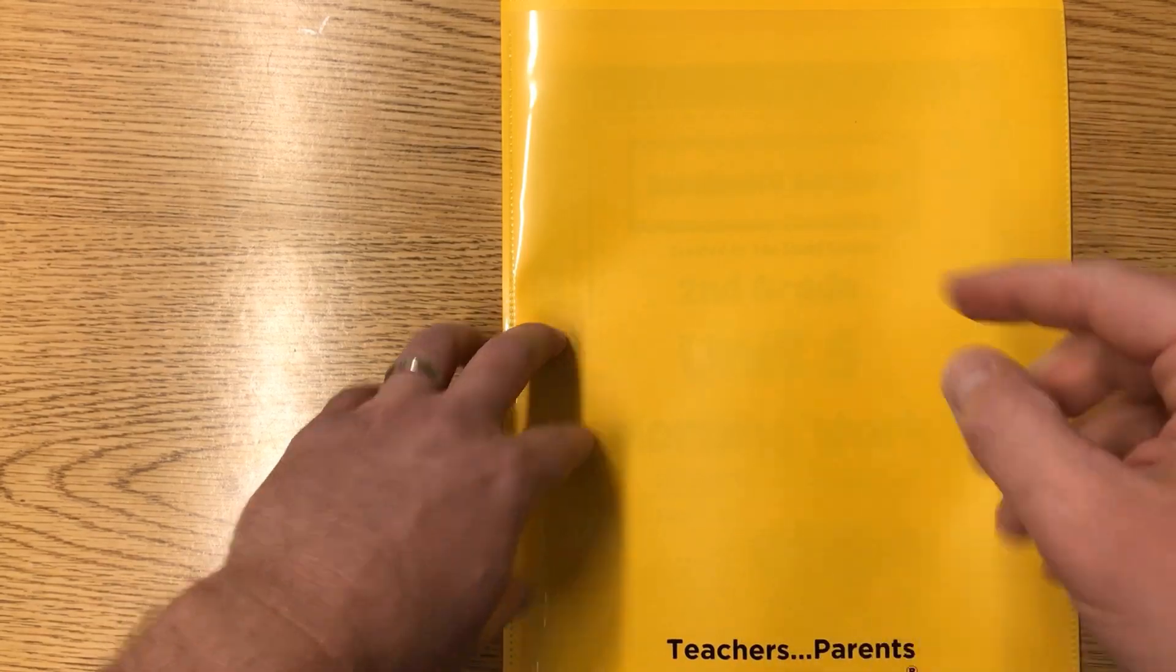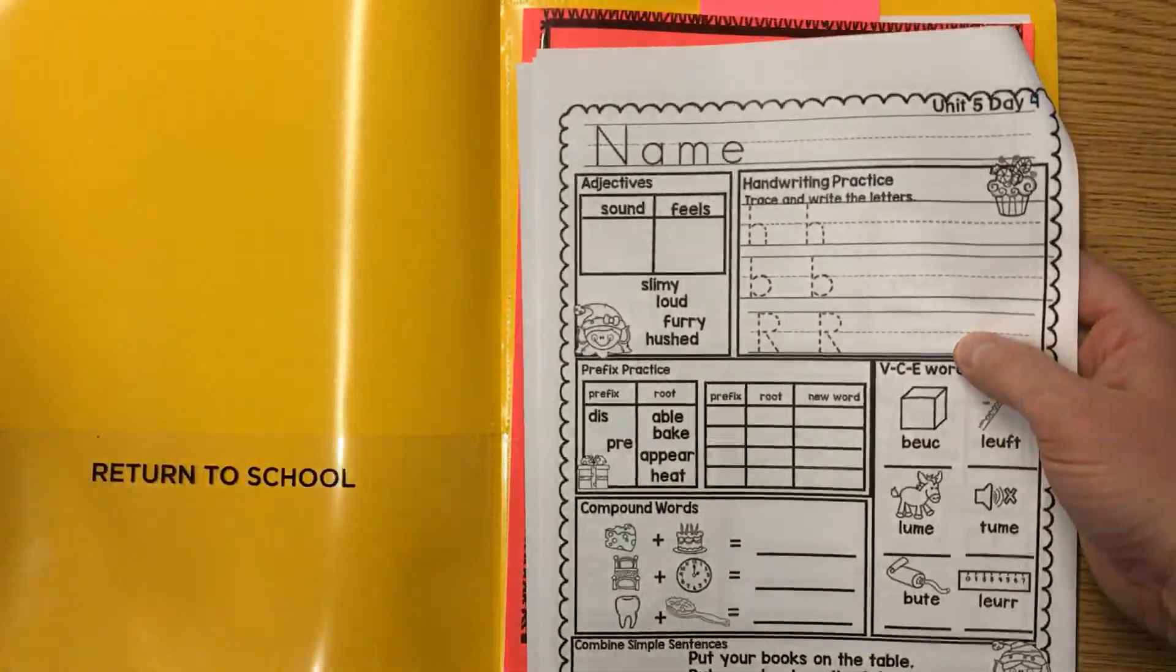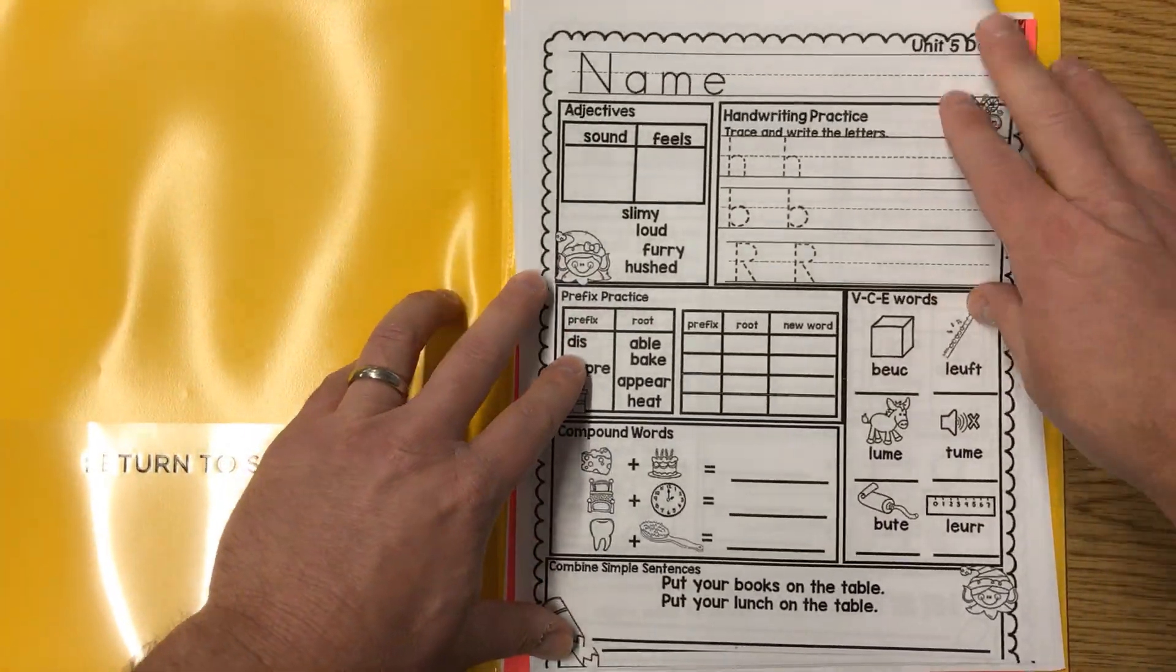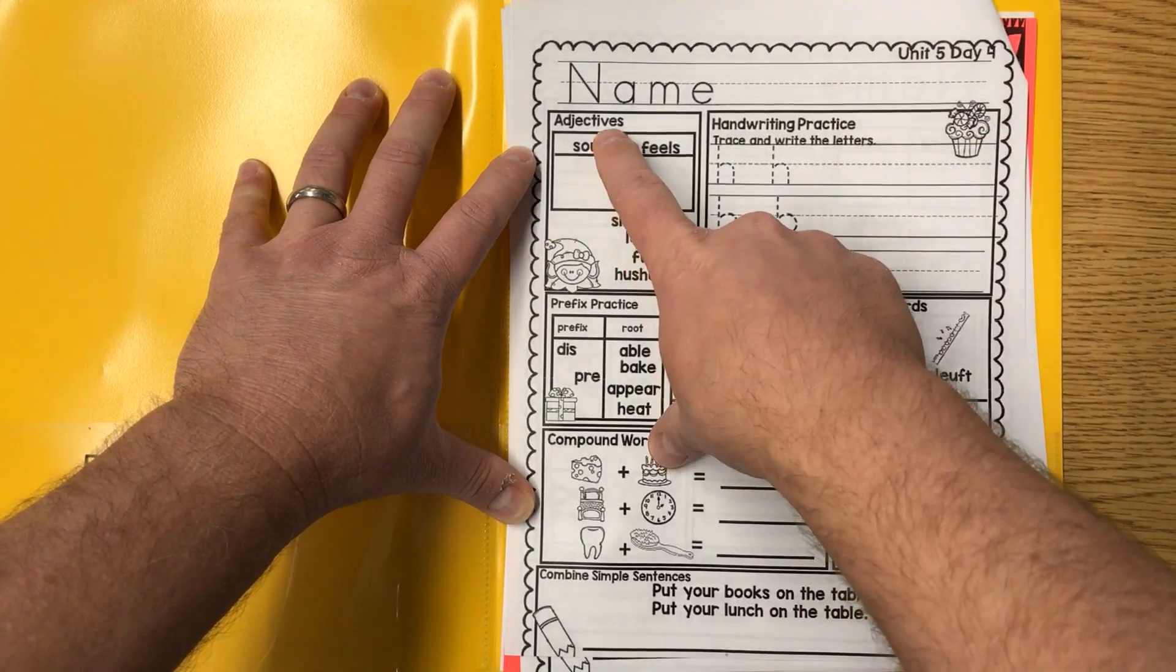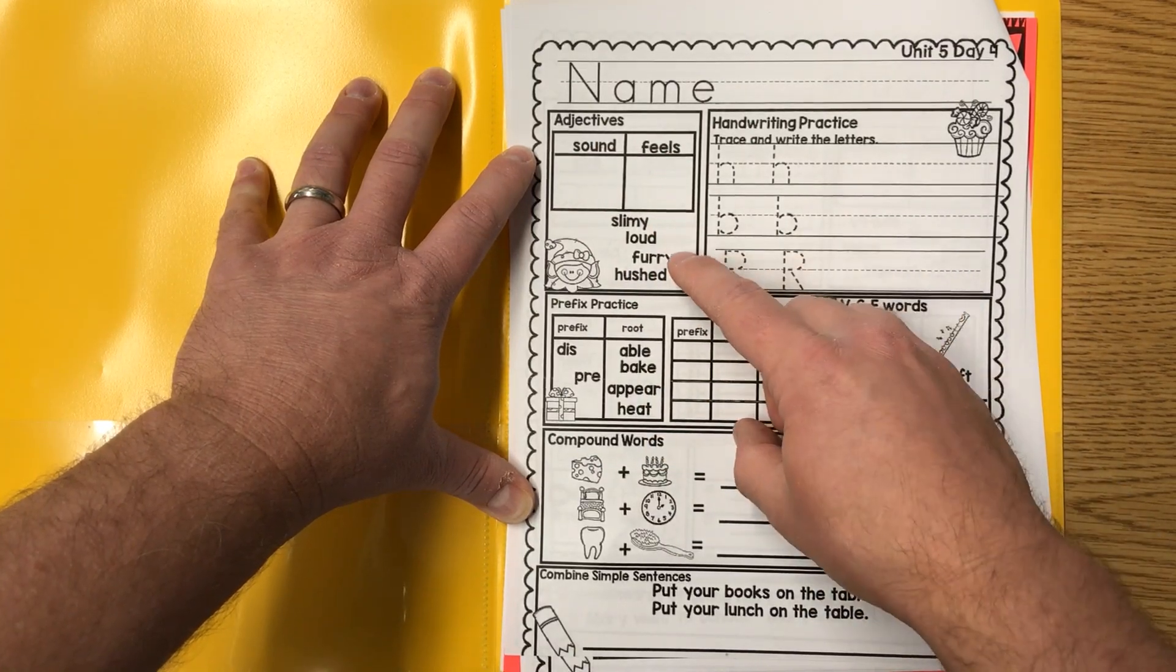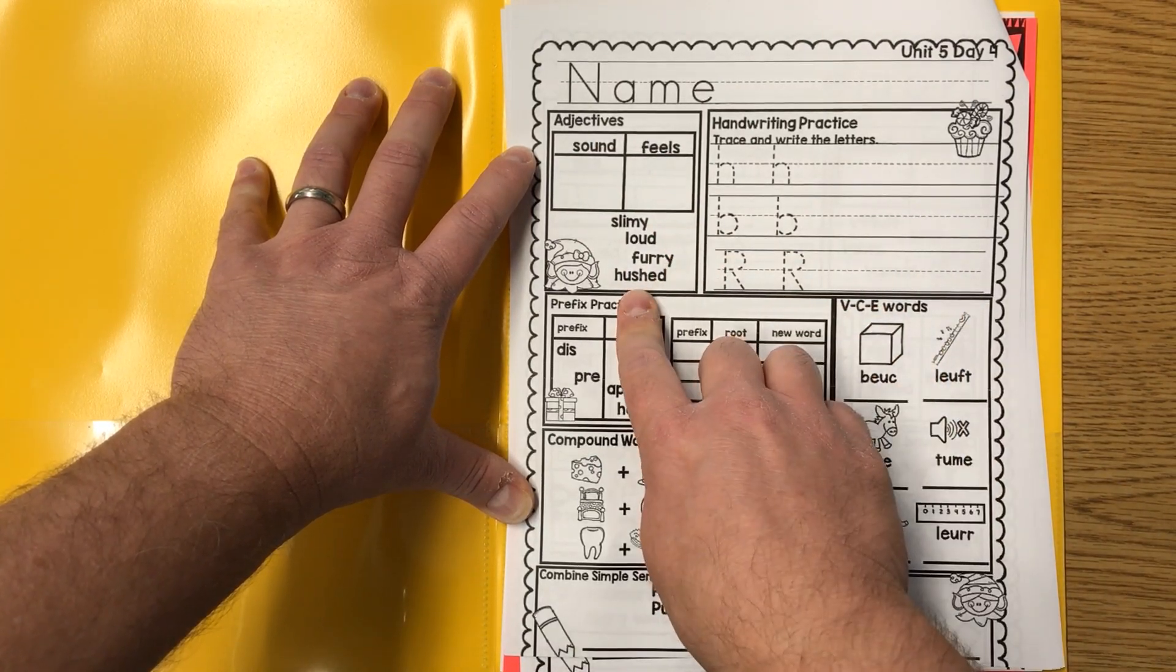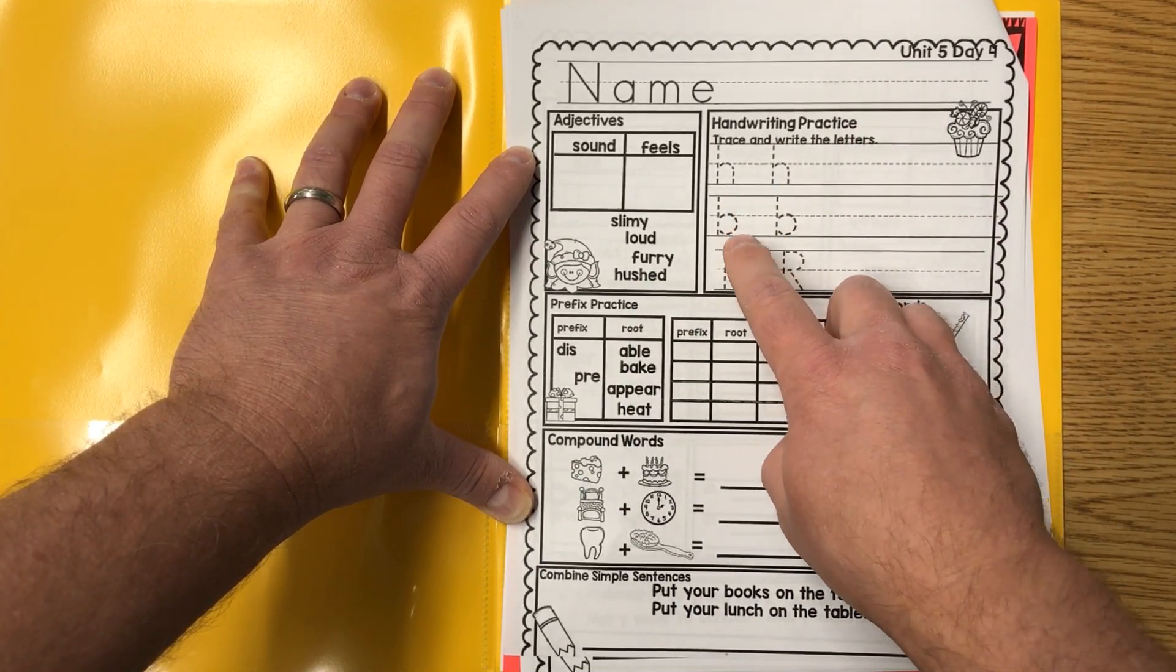All right, let's look at our independent learning for today. We're looking at page four inside our benchmark and math. Let's start with benchmark language arts. Okay, write your name on the line neatly please. Start with your adjectives - you've got sound and feels: slimy, loud, furry, and hushed. Handwriting practice, you've got lowercase a and b and capital R.